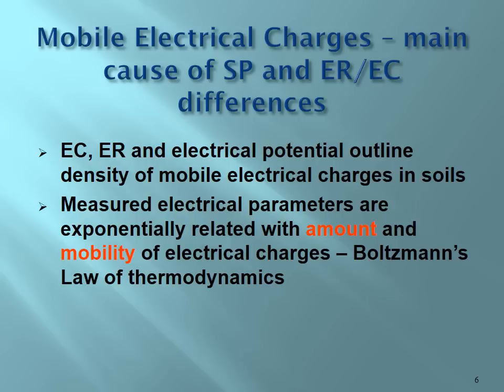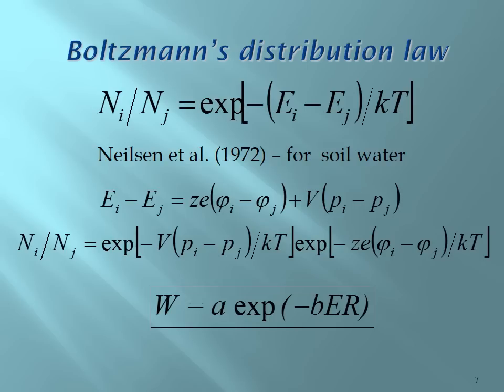What do self-potential and electrical resistivity or conductivity measure? The differences exist in soils because there is a difference in density of mobile electrical charges. Those electrical parameters relate exponentially with the amount and mobility of electrical charges according to Boltzmann's law of statistical thermodynamics. That law states that the density of charges and their energy is exponentially related with the potential and the absolute temperature. Nelson in 1972 adapted this for soil water — we can see through the derivation that soil water content is exponentially related with electrical resistivity, and this applies to other properties as well.